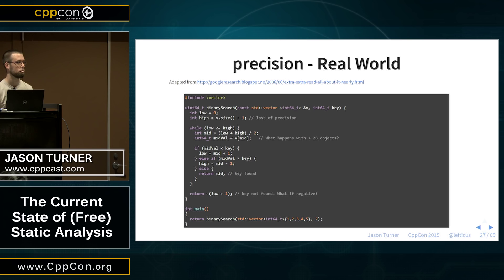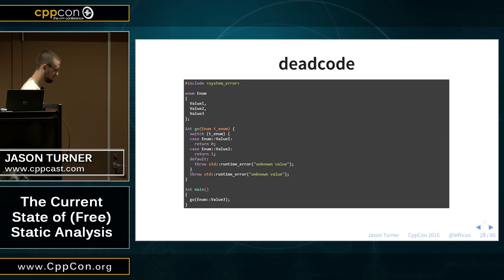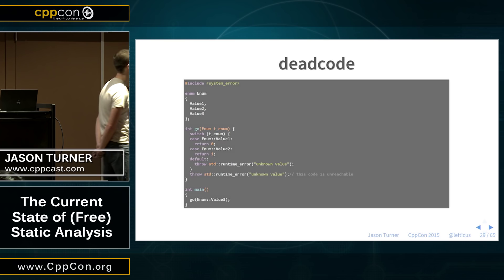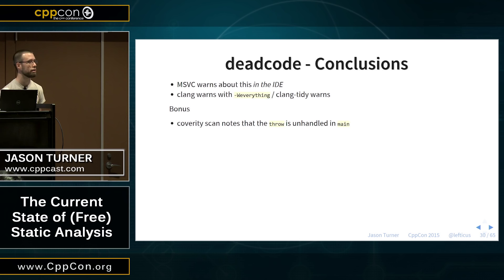The next example — the title might give it away. The throw at the end is never hit; it's unreachable code. Visual Studio warns about that in the IDE, which I thought was pretty cute. Nothing else does. Clang, again, you have to turn it up to -Weverything.